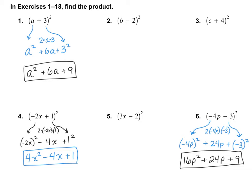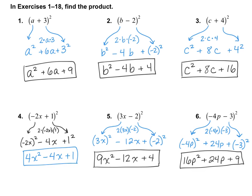Why don't you go ahead and try numbers 2, 3, and 5 on your own. For number 2, I got b squared minus 4b plus 4. For number 3, c squared plus 8c plus 16. And for number 5, I got 9x squared minus 12x plus 4. Please, if you made any mistakes, see if you can find them.